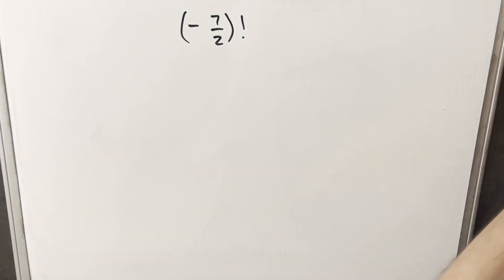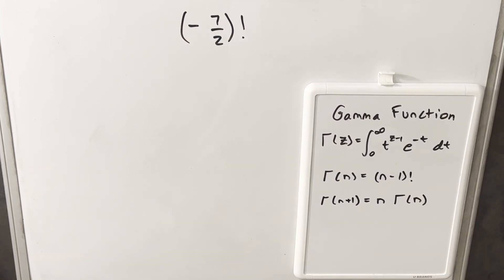So let's take a look at how that's going to work. We have our definition over here on the right, and it defines the gamma function in terms of an integral. But we have this second equation which allows us to relate the gamma function back to factorial.